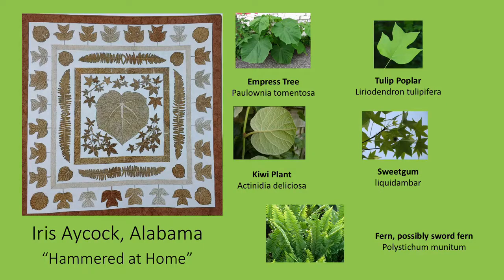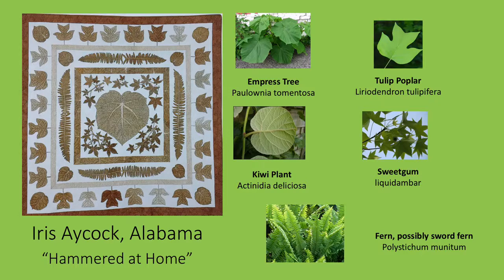A number of quilters do use actual leaves to print images on their quilts. The National Quilt Museum has a quilt titled Hammered at Home by Iris Aycock. Aycock has used a large single empress tree leaf at the center, surrounded by sweet gum leaves, with a border featuring kiwi leaves in the corners and ferns, tulip poplar leaves, and more kiwi plant leaves around the outside. This technique, often called Cherokee leaf pounding, involves taping a leaf to fabric, turning the combined pieces over fabric side up, and literally pounding with a hammer to drive the color from the leaf into the quilt. Aycock then used fabric pens to add details to the leaves and hand dyed the solid borders.